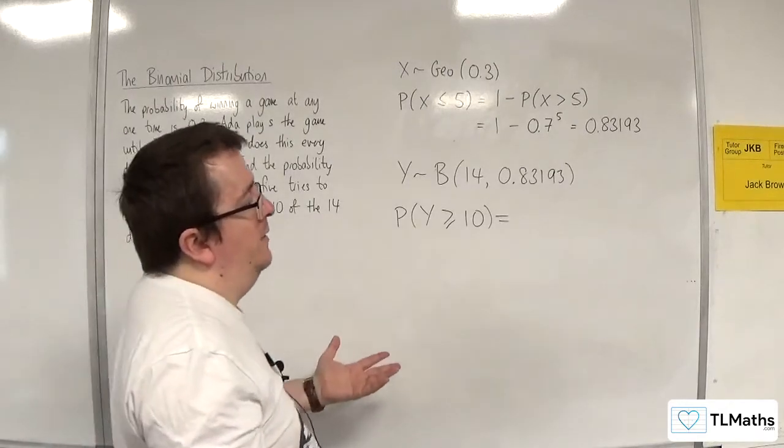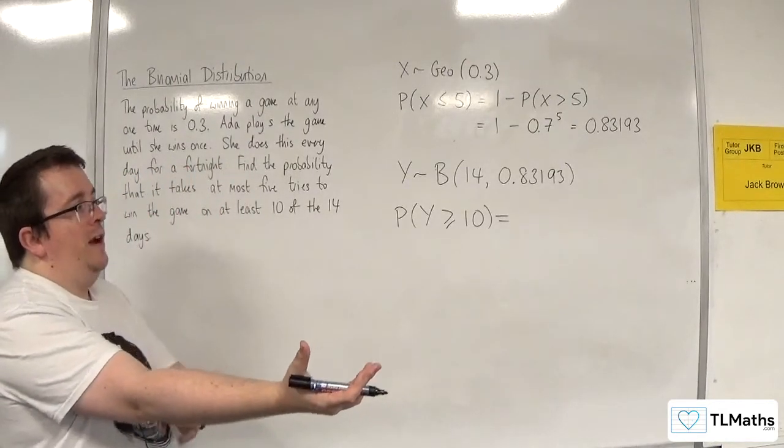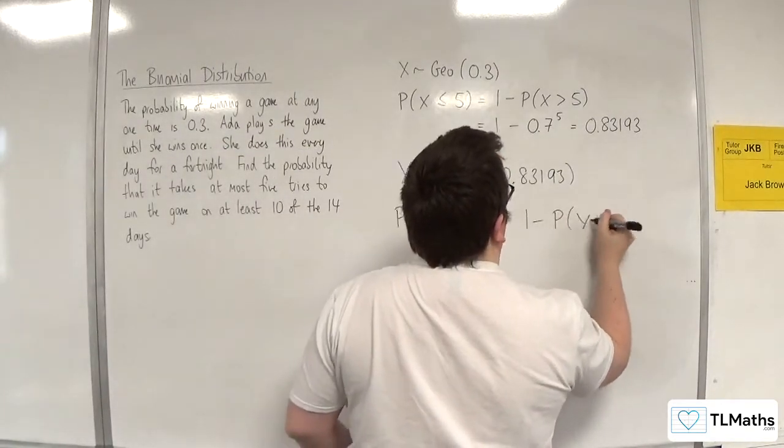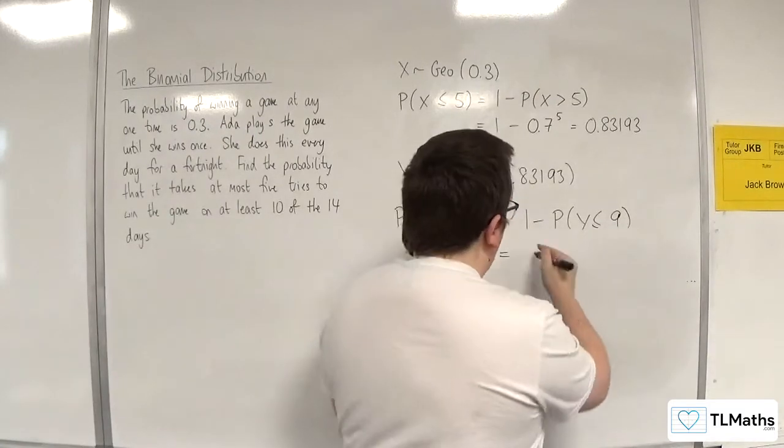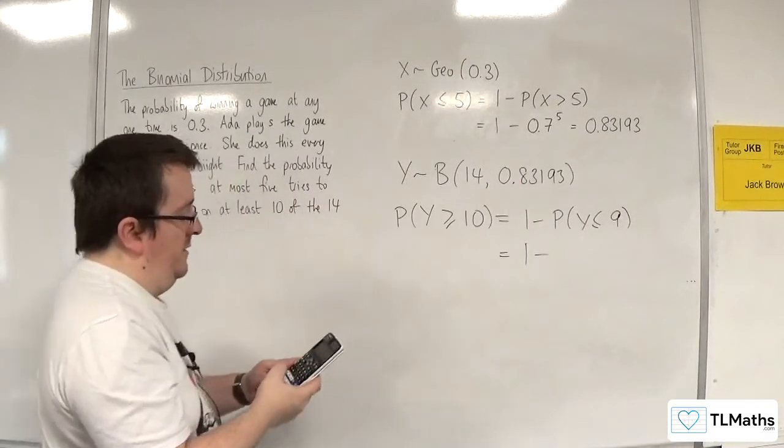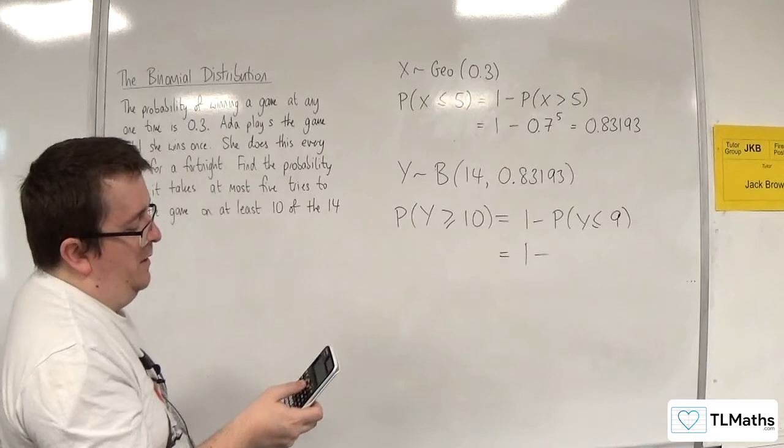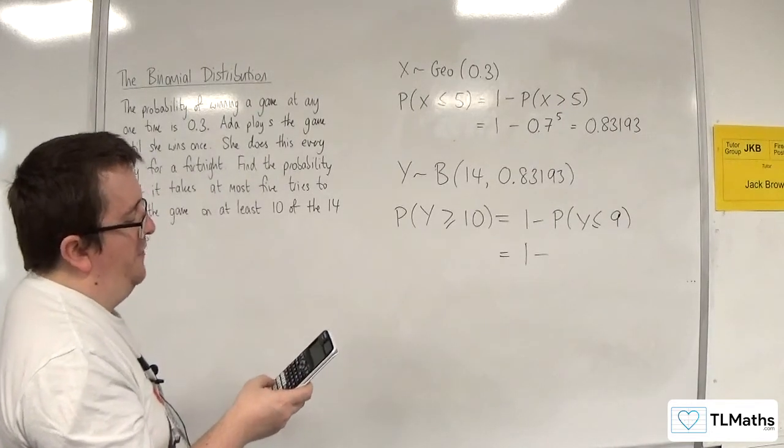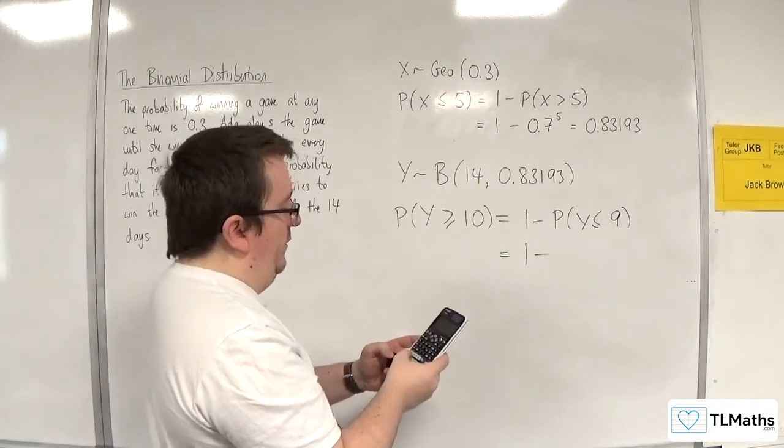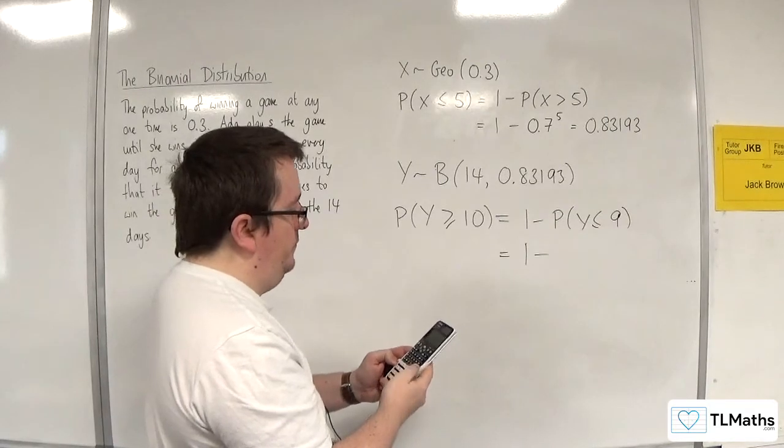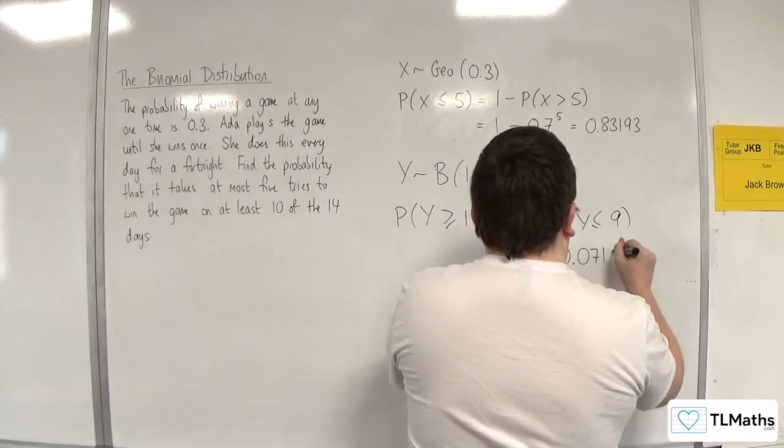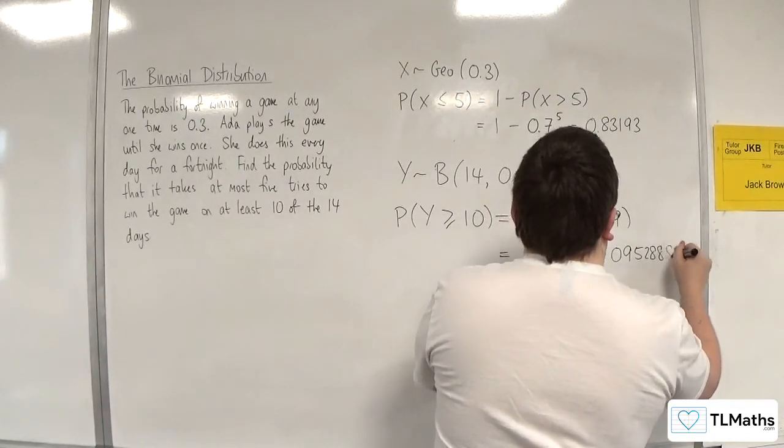I could work that out directly if I've got a calculator that can do it. I'm using the class whiz. So I've got to do one take away the probability of y being less than or equal to 9. Go to menu number 7, distribution, binomial cd, go to variable, x is 9, n is 14. The probability of success is 0.83193. So I get 0.07109528882.